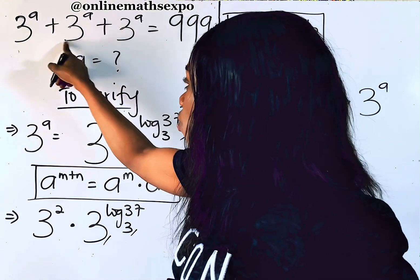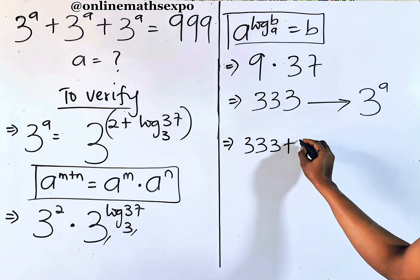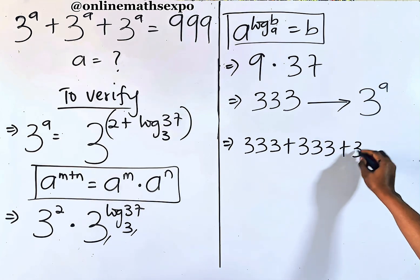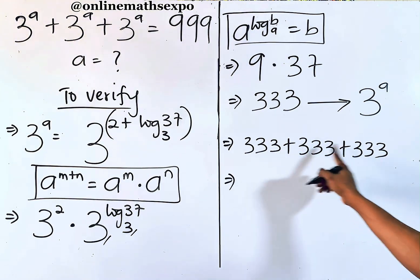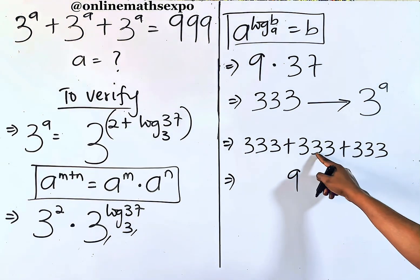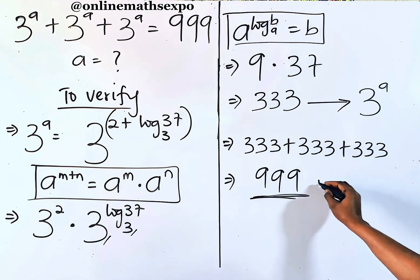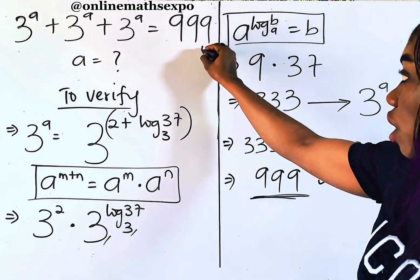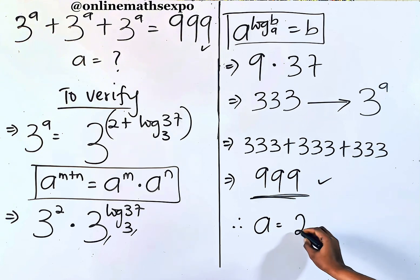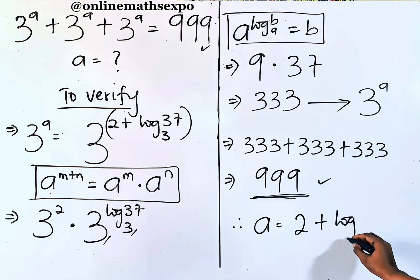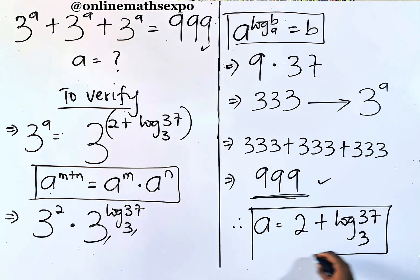Remember that this term is repeated, so we have 333 plus 333 plus 333. Adding these gives 3 plus 3 plus 3 is 9 in each digit column, which gives us 999. That confirms the value of a we got — 2 plus log base 3 of 37 — is absolutely correct.